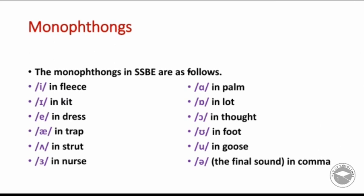Here are the monophthongs in Southern British English: /iː/ as in fleece, /ɪ/ as in kit, /e/ as in dress, /æ/ as in trap, /ʌ/ as in strut, /ɜː/ as in nurse, /ɑː/ as in palm, /ɒ/ as in lot, /ɔː/ as in thought, /ʊ/ as in foot, /uː/ as in goose, and /ə/ as in comma.